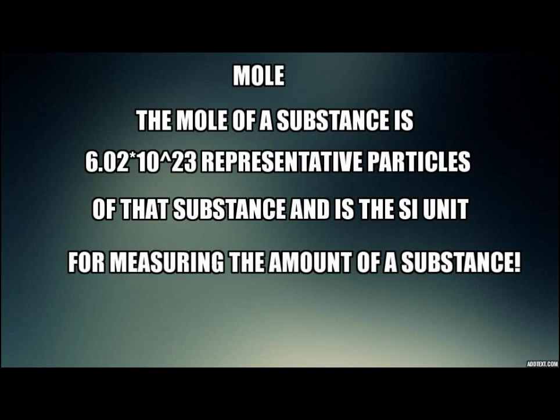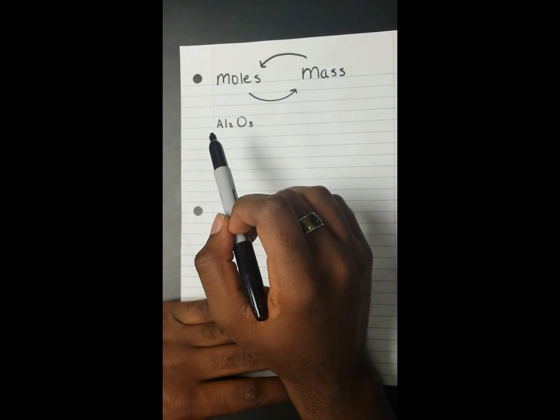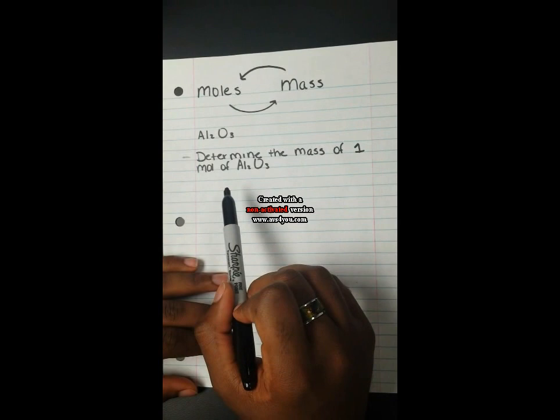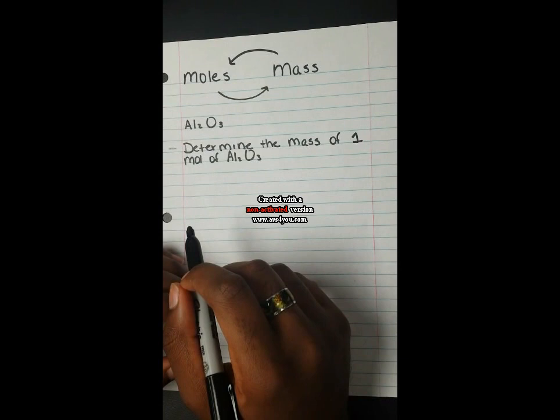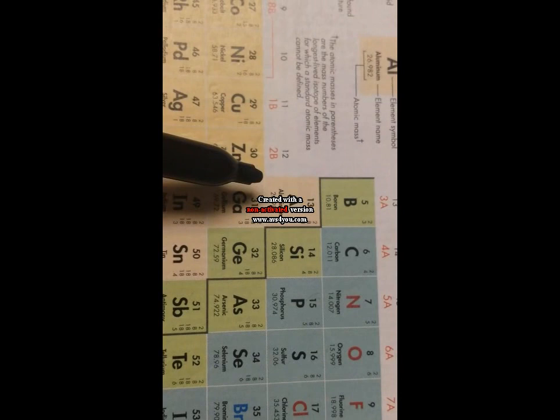In this exercise, we'll be converting from moles to mass and vice versa. We'll be using Al2O3, also commonly known as aluminum oxide. The first step is to determine the mass of one mole of aluminum oxide. For that, we'll need to find the atomic mass of both atoms present: aluminum, which has a mass of 26.9, or rounded to 27, and oxygen, which has an atomic mass of 15.9, or rounded to 16.